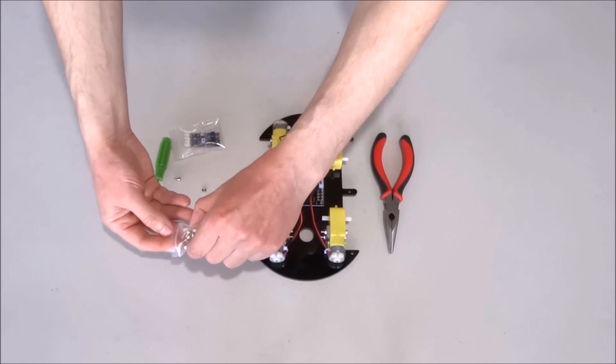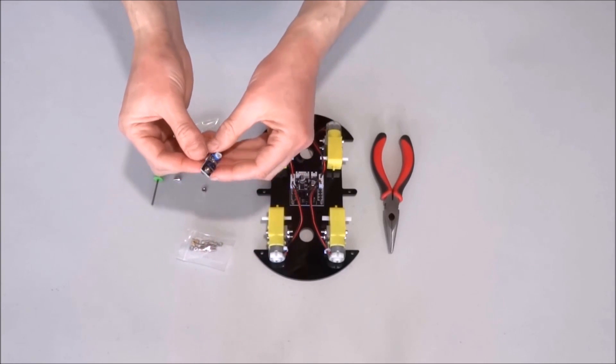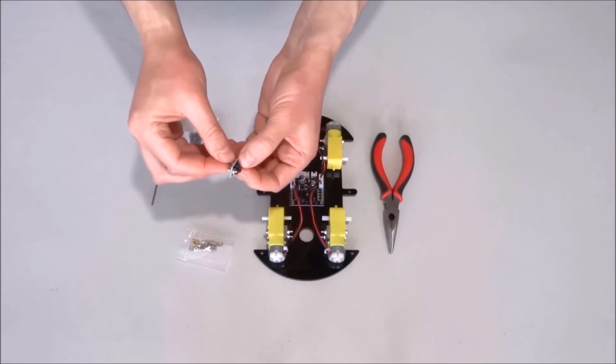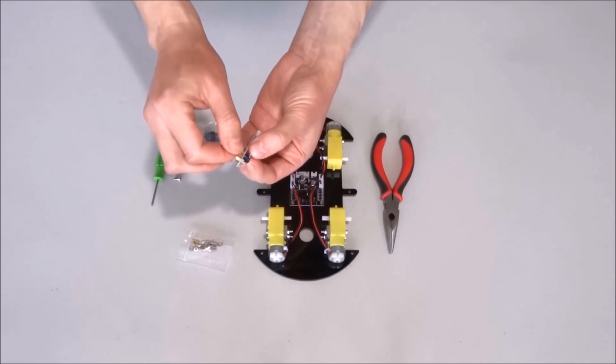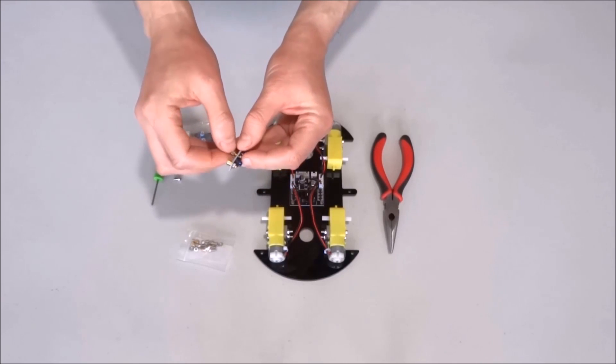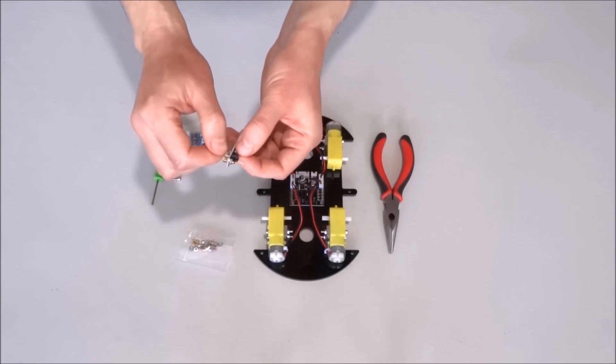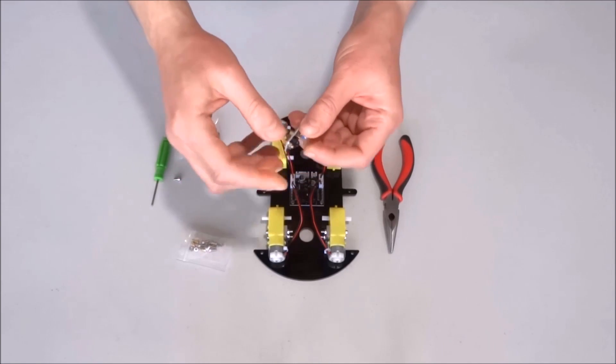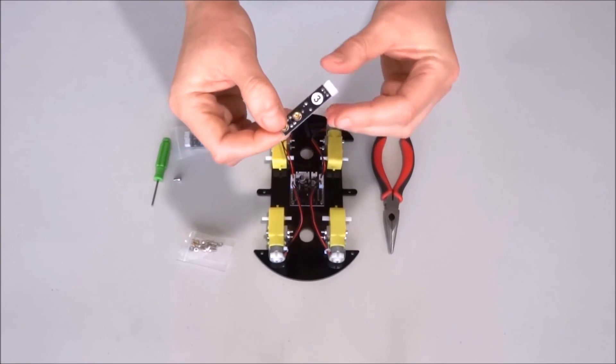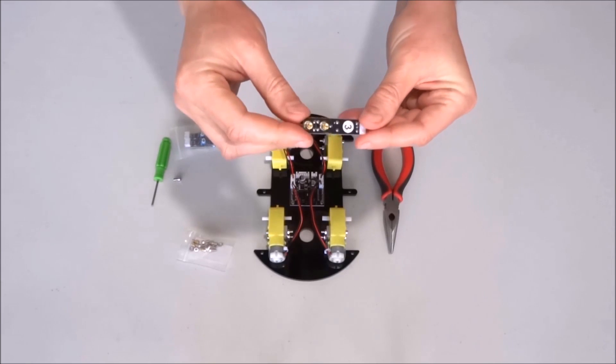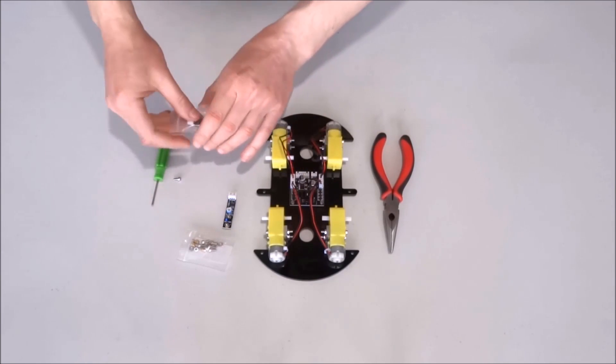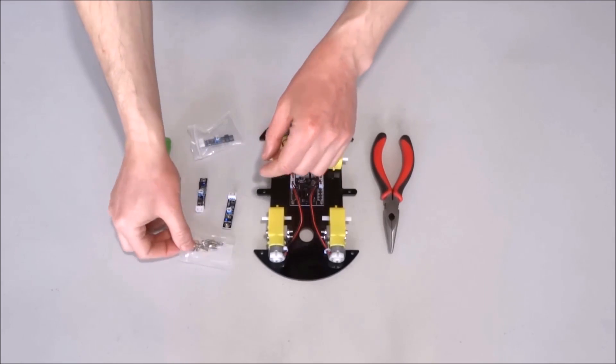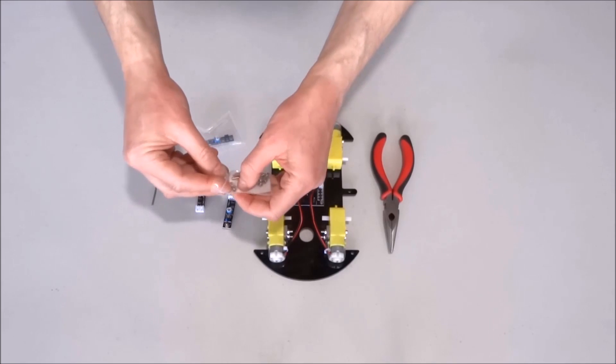Take a second spacer and repeat the same procedure for the second hole. This is how the sensor should look like. This sensor is ready to mount and we'll repeat the same procedure for the other two sensors.